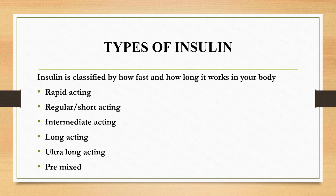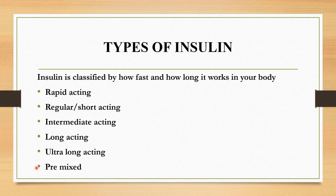Let's see about the types of insulin. Insulin is classified by how fast and how long it works in your body. It's been classified into rapid-acting insulin, regular or short-acting insulin, intermediate-acting insulin, long-acting insulin, ultra-long-acting insulin, and pre-mixed insulin.